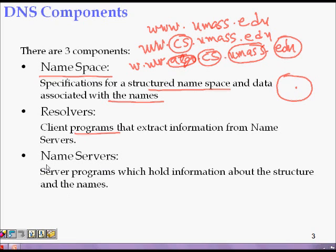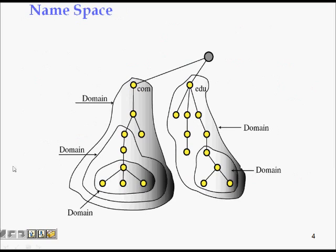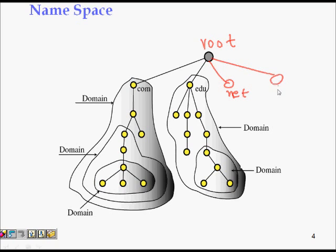Name servers hold the structure of the names. The namespace starts with a root, which delegates requests. At the root level you have .com, .edu, .net, .org, and so on. The last part of your URL corresponds to these top-level nodes, which indicate whether it is an educational or commercial website.